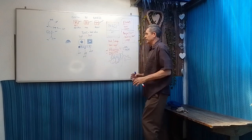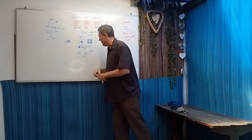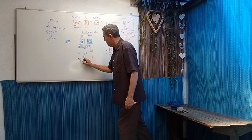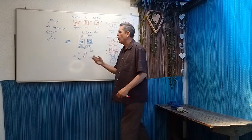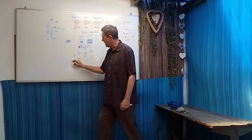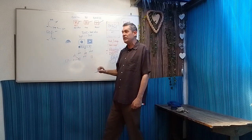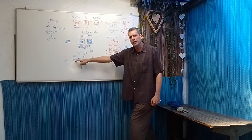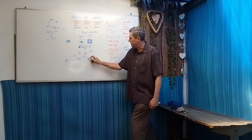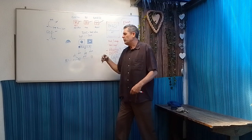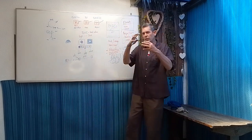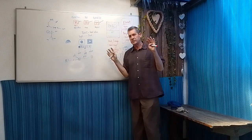Every color has a range from its purest color to black on one side and to white on the other. The purest red is the most vibrant. Going toward black, you start getting burgundy and dark red. Going toward white, you start talking about pastels. When you add black, we talk about shades; when you add white, we talk about pastels.